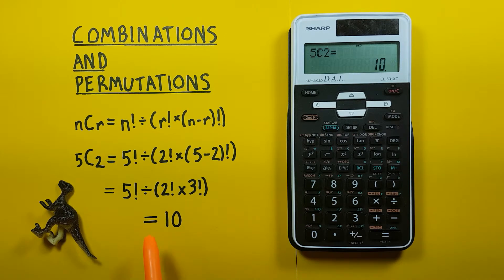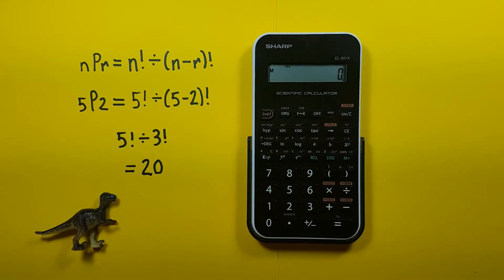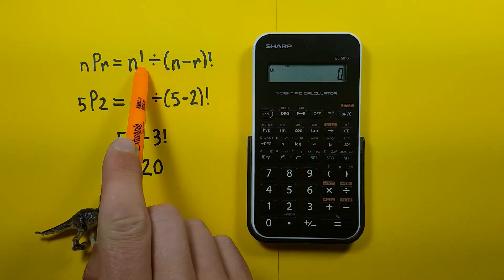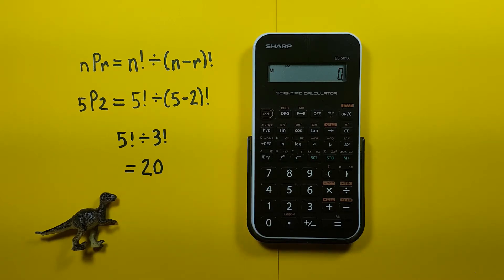Here on the screen we see 5C2 or 5 choose 2 combinations and there are 10 possible combinations there so we know that this gave us the correct answer. All right, and if we want to solve for permutations we use this formula here: N factorial divided by N minus R factorial.